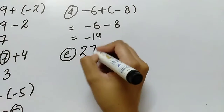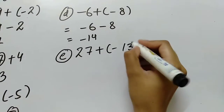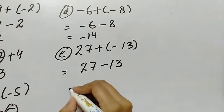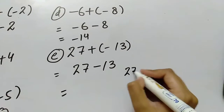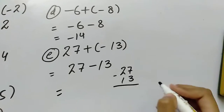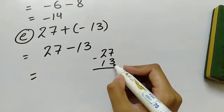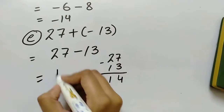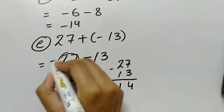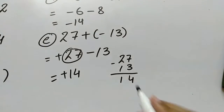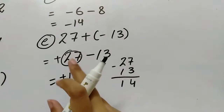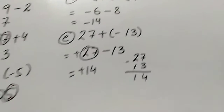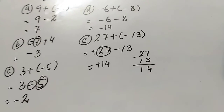Now E part: 27 plus minus minus 13. Minus minus is plus, so we subtract 27 minus 13. That gives 14, and with the bigger sign being plus it will be positive 14. So as you've seen, we subtracted but the sign is positive. That's how we solve these questions.